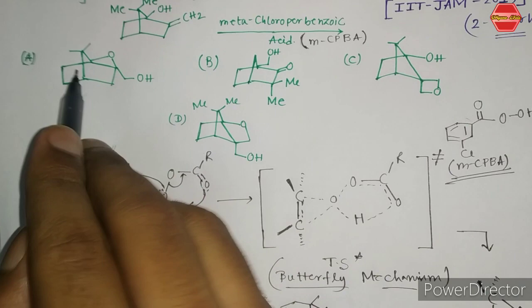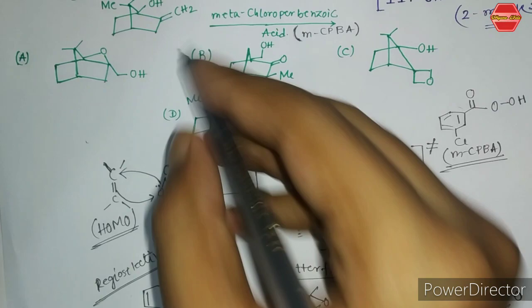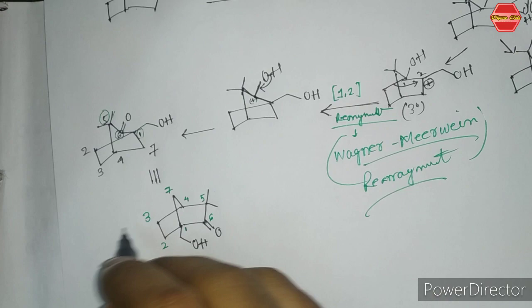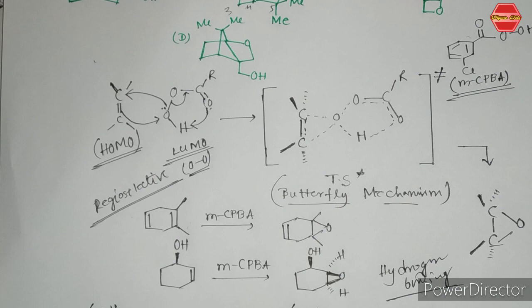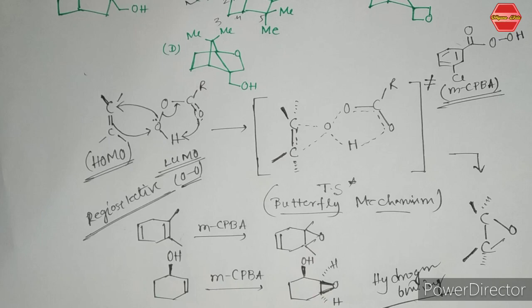So this is your final concept — the Wagner-Meerwein rearrangement. Now check your answer options: one option shows oxidation with a four-membered ring, another also has a four-membered ring, but the correct answer is the one we derived. Here, numbering from one through seven, this is your final product. For this question, two important concepts are: the use of MCPBA and the rearrangement reaction.